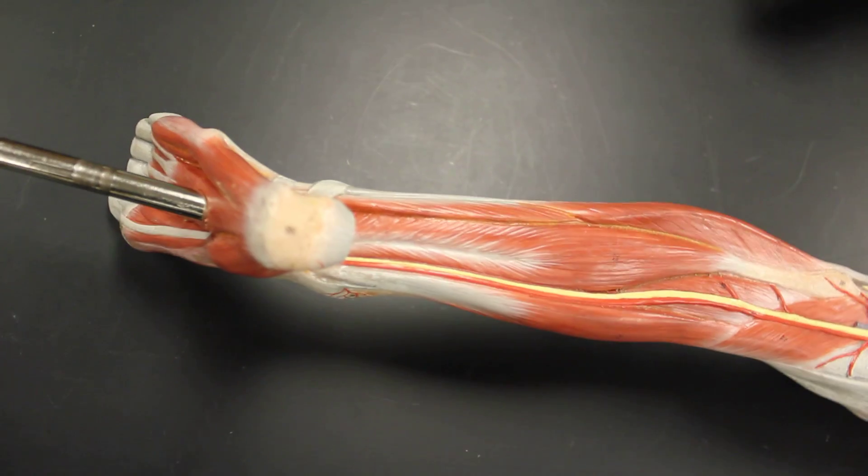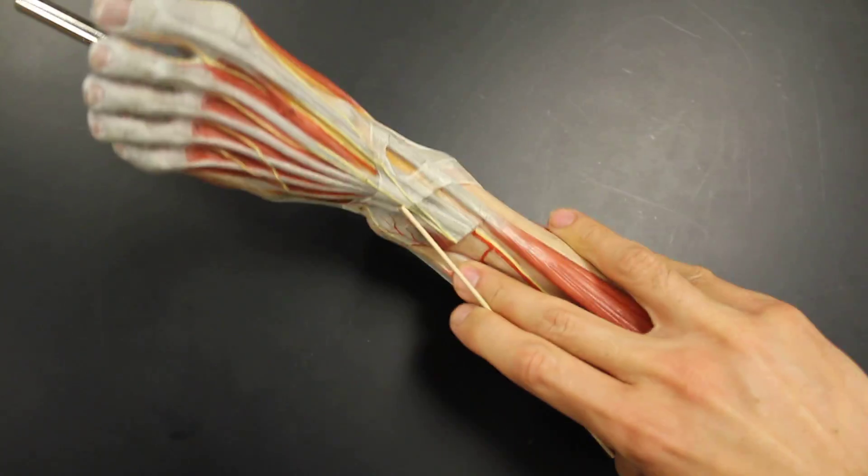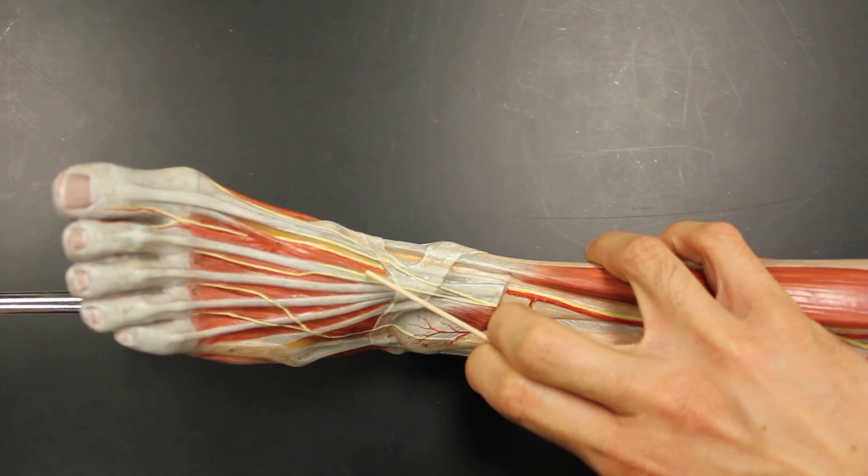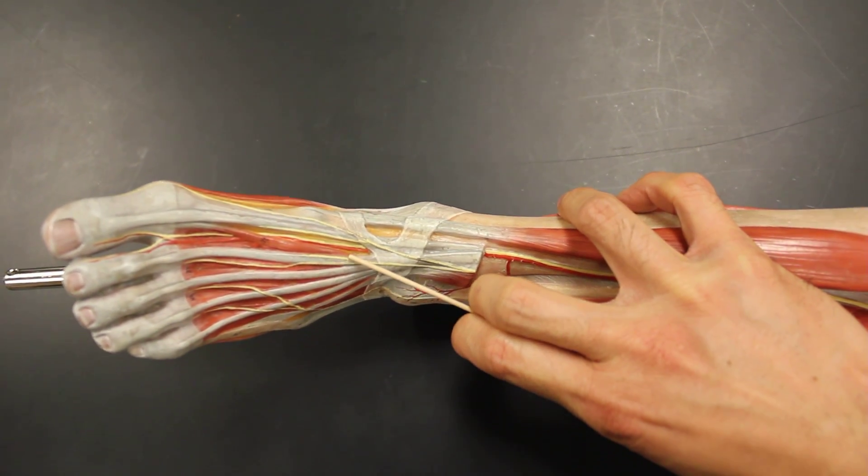The proper common and then the proper digital. While the anterior tibial continues and crosses the ankle and goes on to the top of the foot, we call that the dorsalis pedis or the dorsal pedal artery.